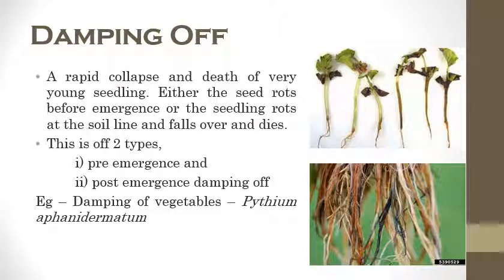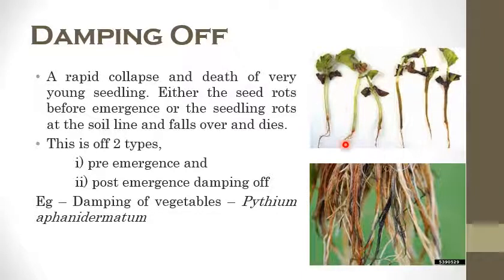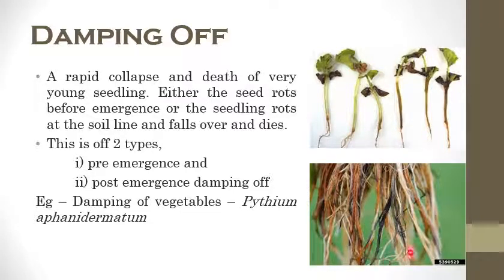The next one is damping off — rapid collapse and death of young seedlings. Damping off is of two types: pre-emergence and post-emergence. Pre-emergence damping off means seeds rot before they emerge from the soil. Post-emergence damping off means seeds die after emergence. This is mainly observed in nurseries because seedlings play a major role in vegetable nurseries. Damping off is caused by Pythium aphanidermatum.